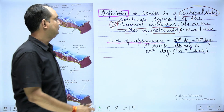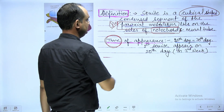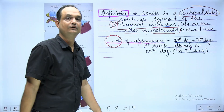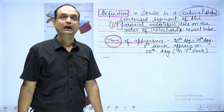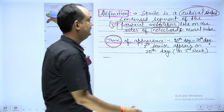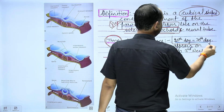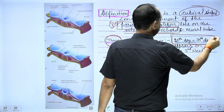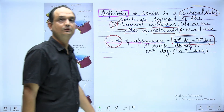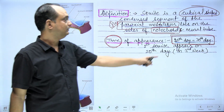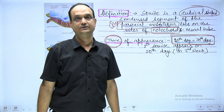What is the time of appearance? The time of appearance of somites is known as the somite period. The somite period is from the 20th day to the 30th day. The first somite appears on the 20th day after fertilization.